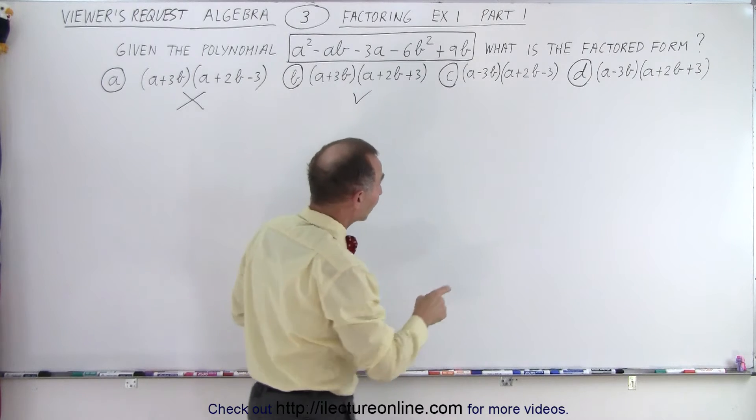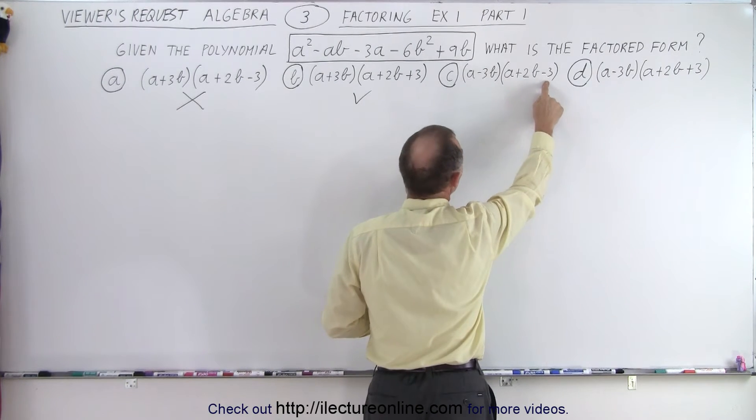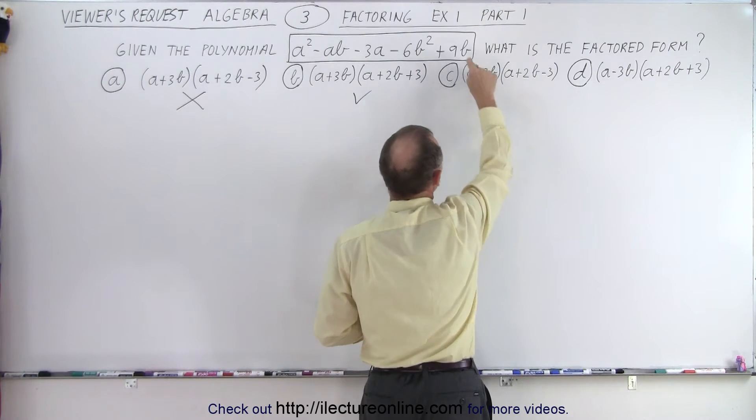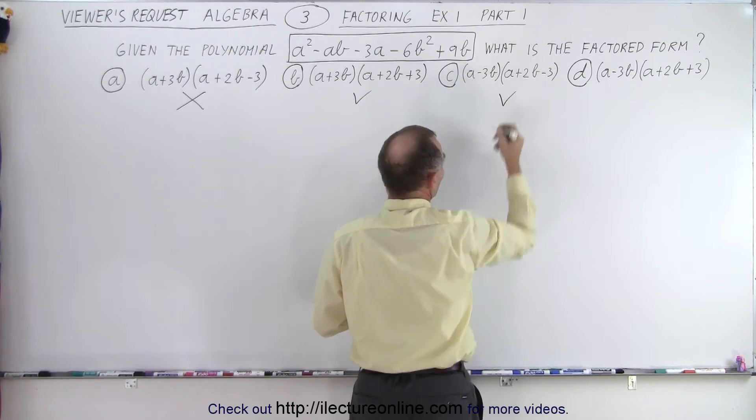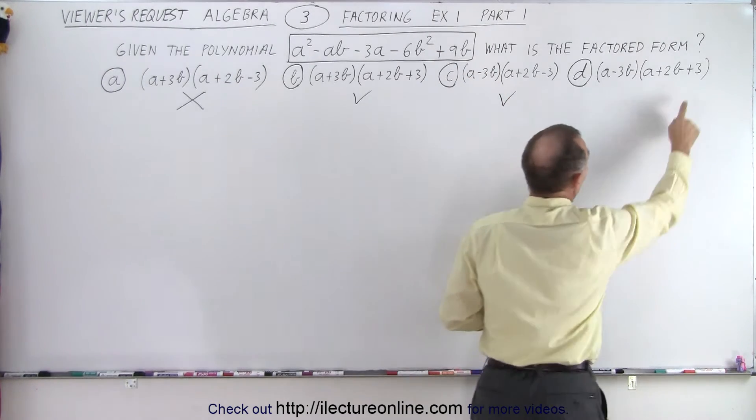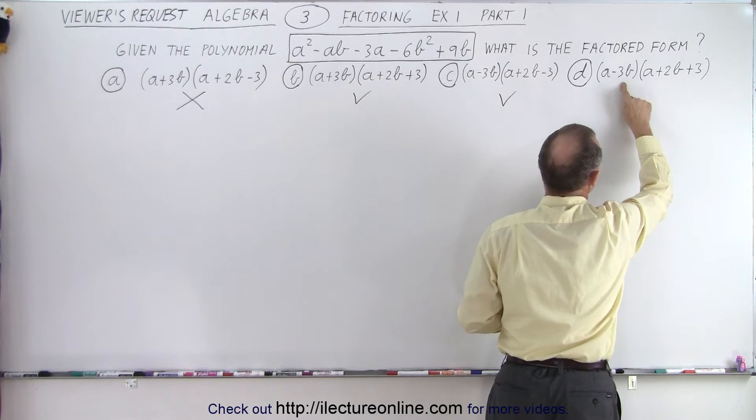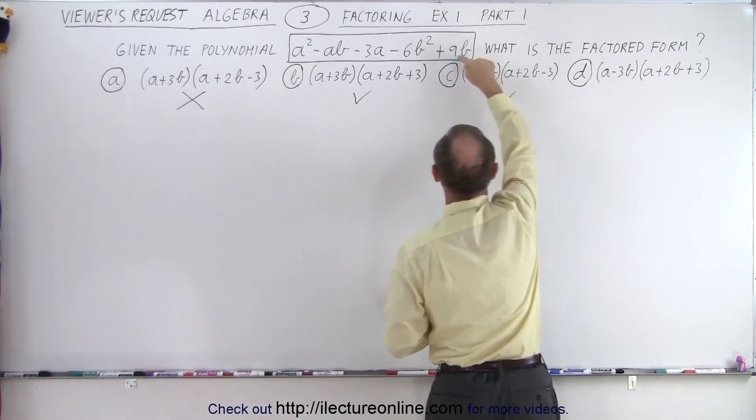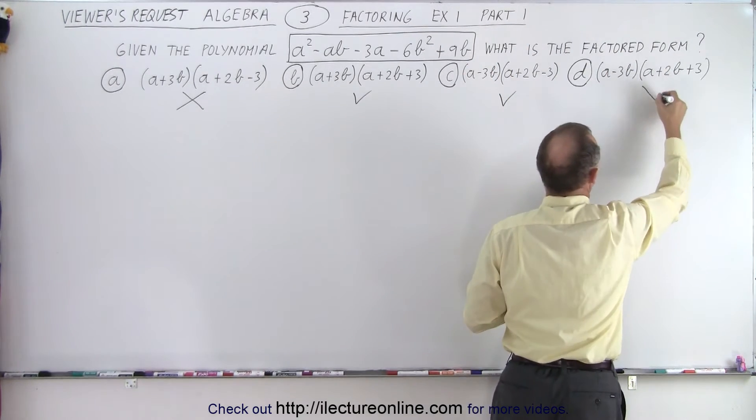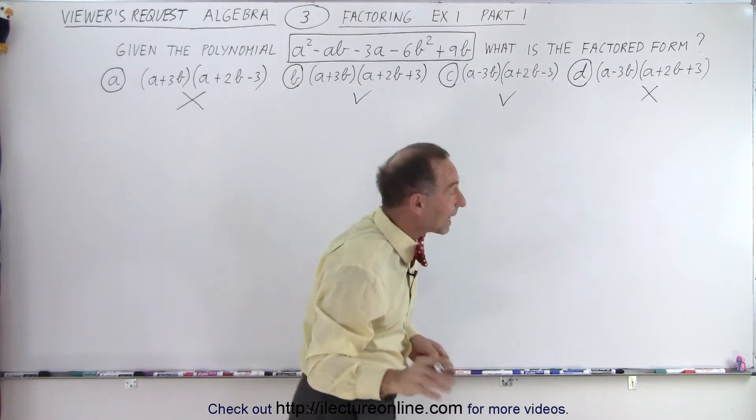If I go over here to C, a negative 3 times a negative 3b gives me a positive 9b, so C is a possible solution. And here a 3 times a negative 3b gives me a negative 9b, which is not what I have over there, so that's not part of the solution.